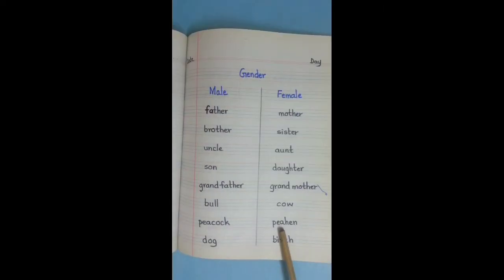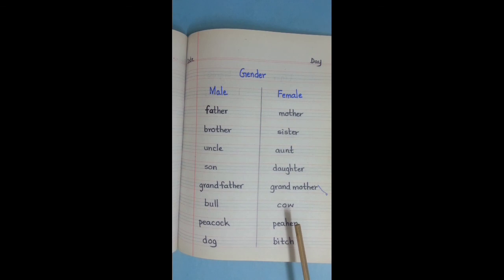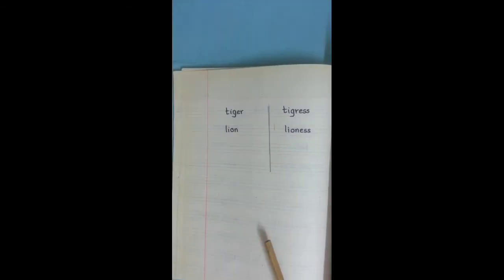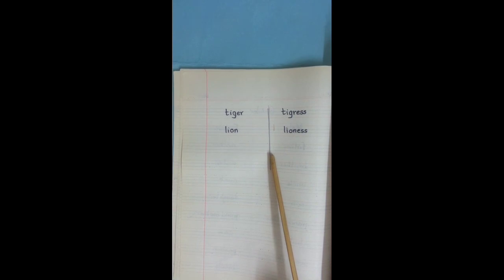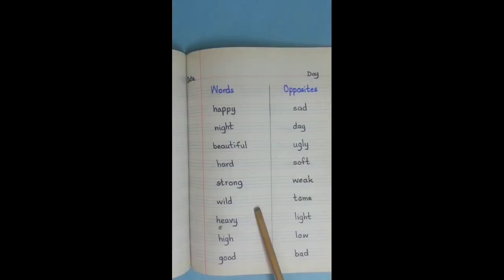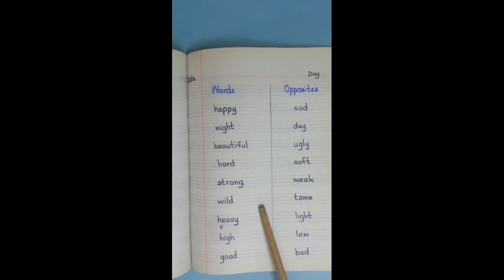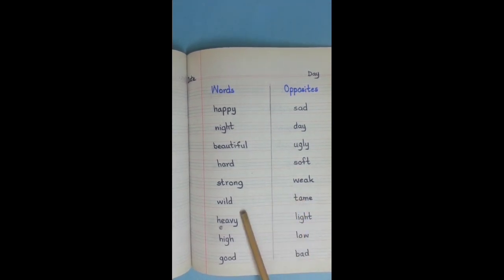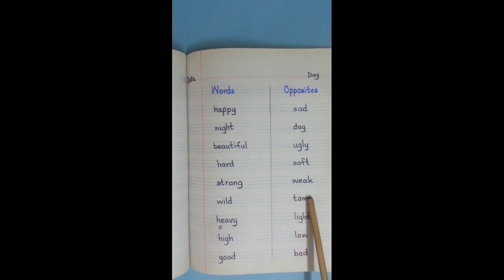You complete the creative writing on myself. Now take out your notebook. Put the date and day and note down the list of male and female words. Turn the page and complete it. Now on the next page, put the date and day. First you put the date and day and complete the list of word opposites. Turn the page and complete it.